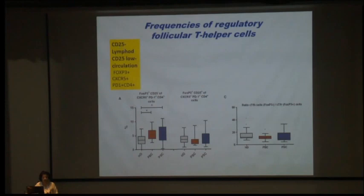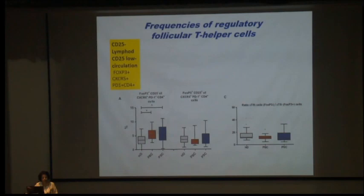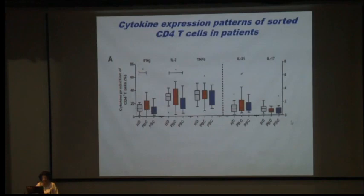They also examined regulatory follicular T helper cells — characterized as CD25-low in circulation, FOXP3+, CXCR5+, PD-1+, CD4+ — and found that regulatory follicular T cells were more abundant in PBC, but the ratio of T-FH to regulatory follicular T cells was decreased, indicating a relative deficiency of suppression. Interferon-gamma, IL-21, and IL-17 were also increased, with IL-21 being the main cytokine for T-FH activation.